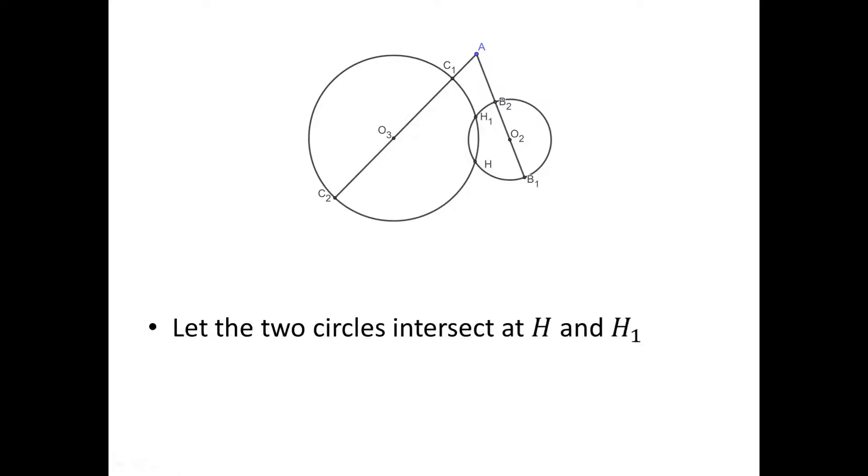Let's say two circles intersect at H and H1. H, as we know, is the orthocenter of triangle ABC. H1 is the other intersection. If A, H, and H1 are on the same line, this is a really big if and it is the critical assumption to the problem.